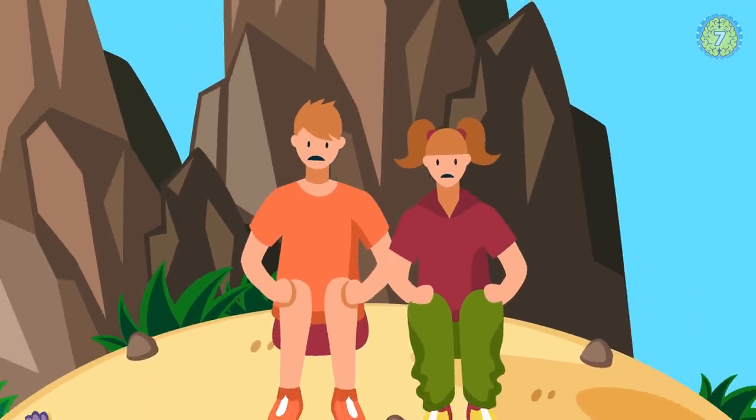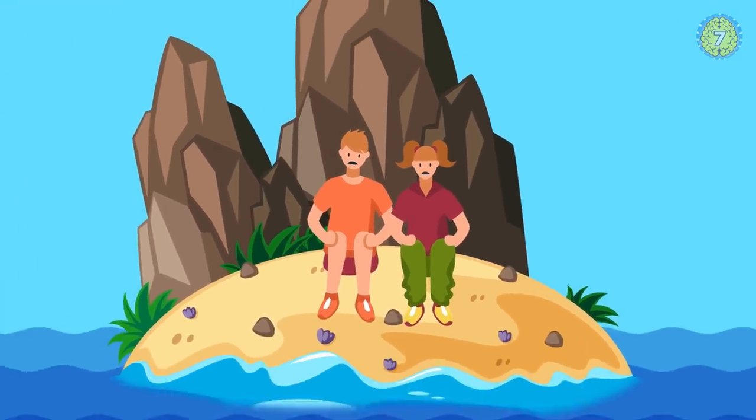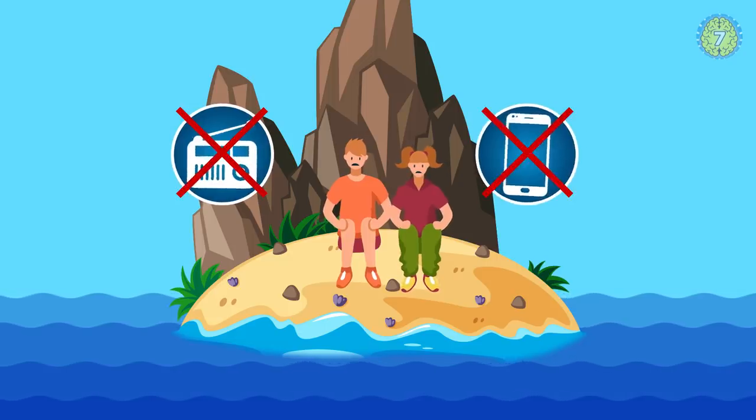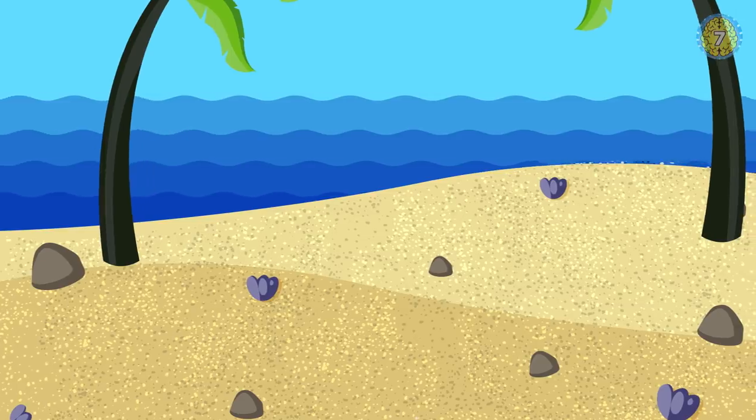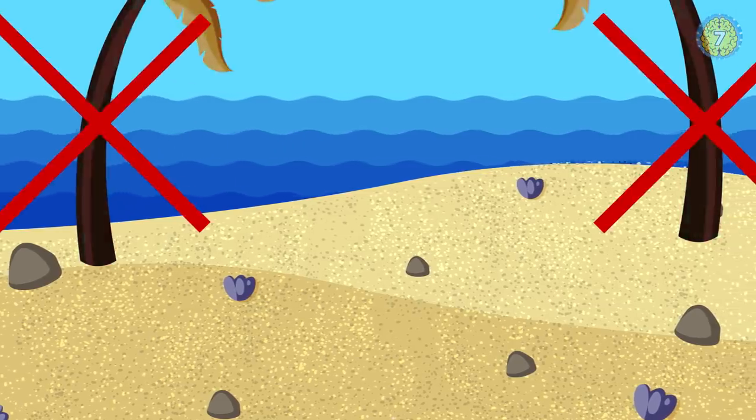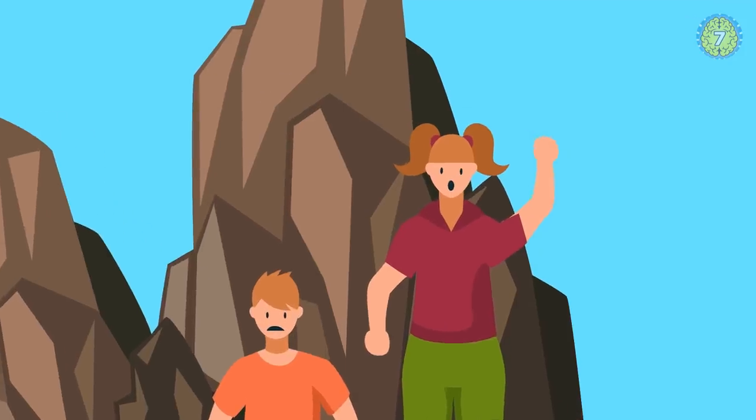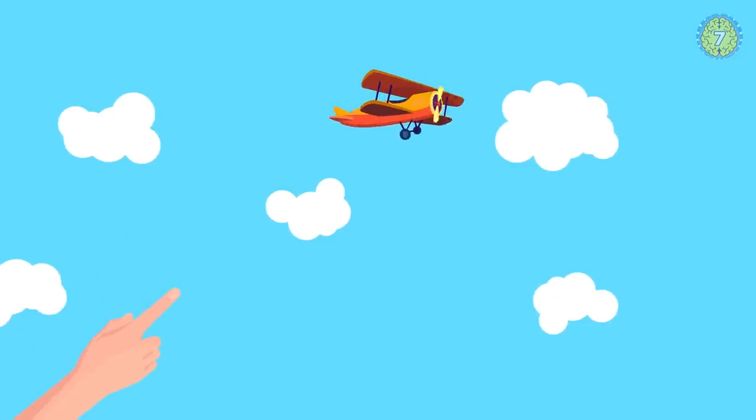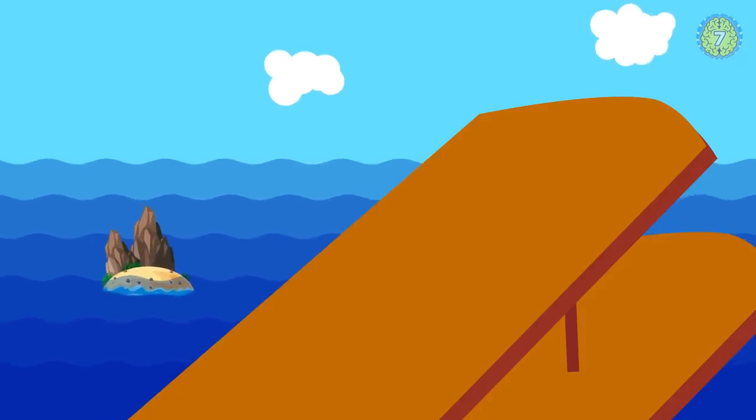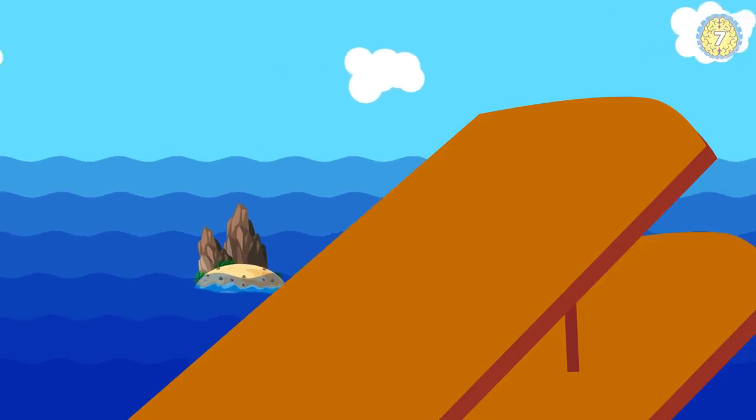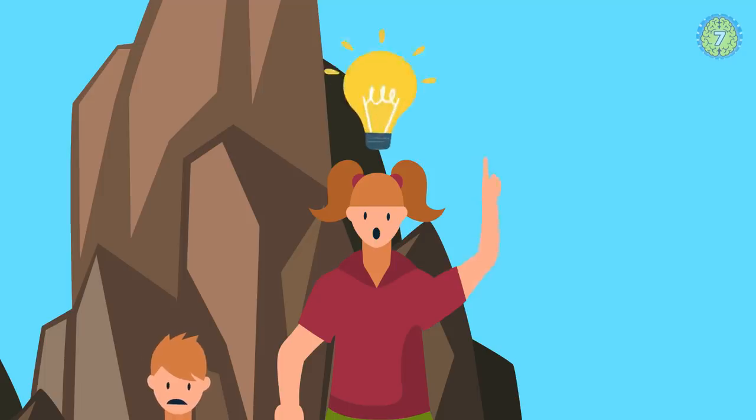David and Hannah got stranded on a tiny, uninhabited island. They had no radio or cell phones, so they couldn't inform rescuers about their dire situation. There were no trees on the island, so they couldn't make a smoke signal. Suddenly, Hannah noticed a plane circling the sky in search of them. Unfortunately, it was flying too high, and the pilot couldn't notice them. That's when she got a bright idea.